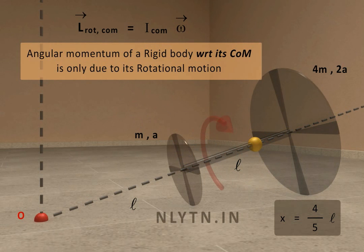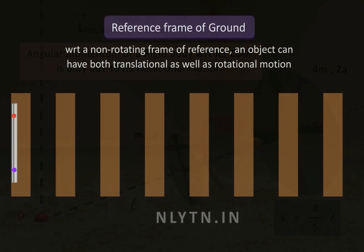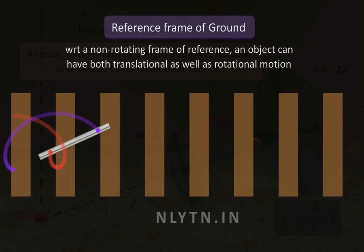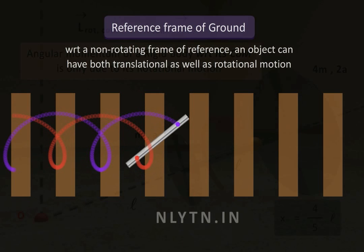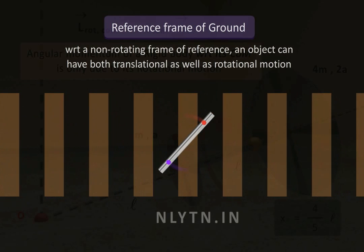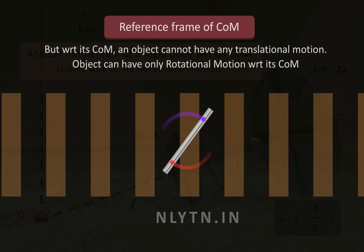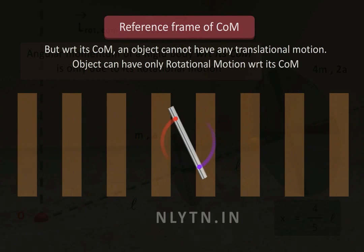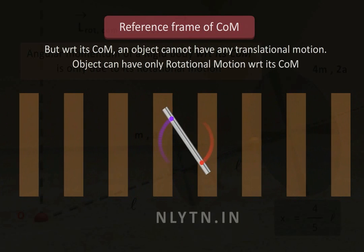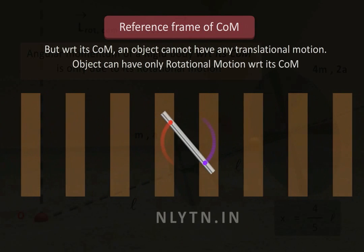Now, angular momentum of the entire system with respect to its center of mass is only due to the rotational motion of the system. We know that with respect to an inertial frame of reference, or a non-rotating frame of reference, an object can have both translational and rotational motion. However, with respect to the center of mass of the object, it cannot have any translational motion. The object can have only rotational motion with respect to its center of mass.